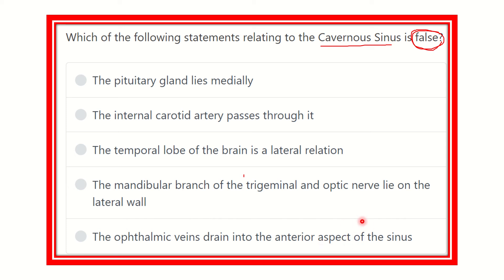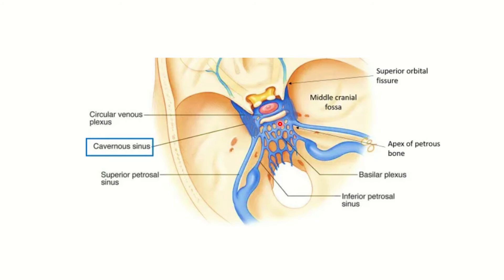Looking at the picture of the cavernous sinus, we can see the cavernous sinus is located on either side of the sella turcica of the sphenoid bone. There are two cavernous sinuses, and between them, medially, there is the pituitary gland. So the pituitary gland lies medially relative to the cavernous sinus.